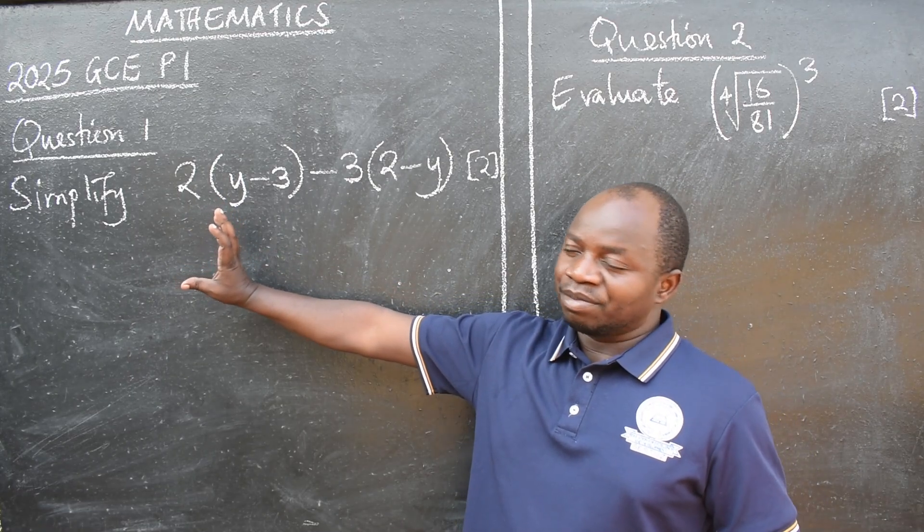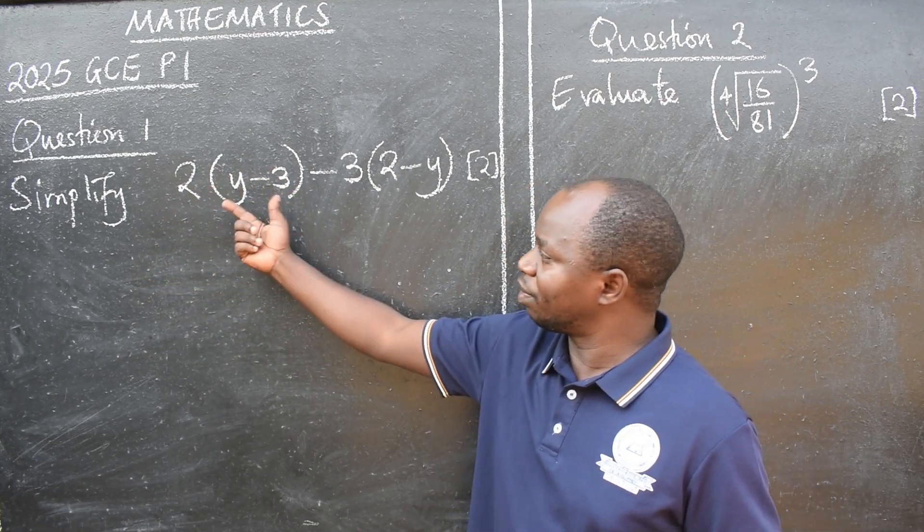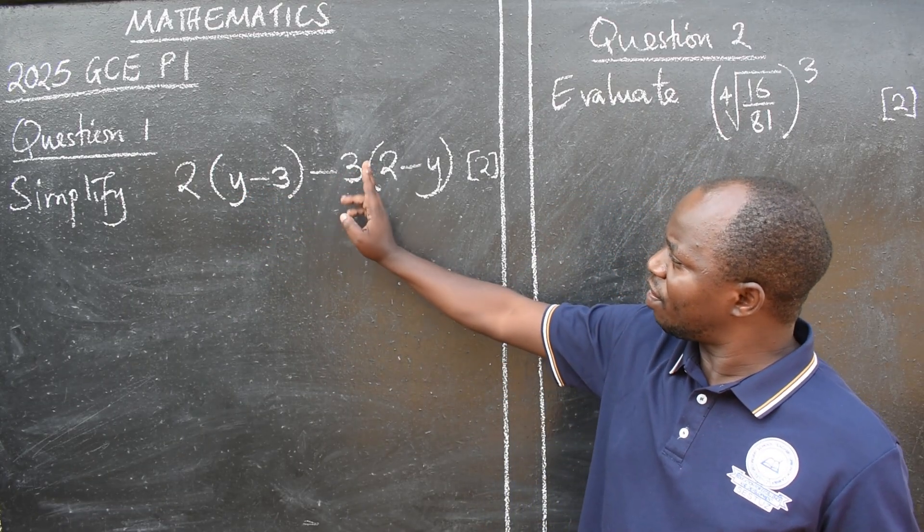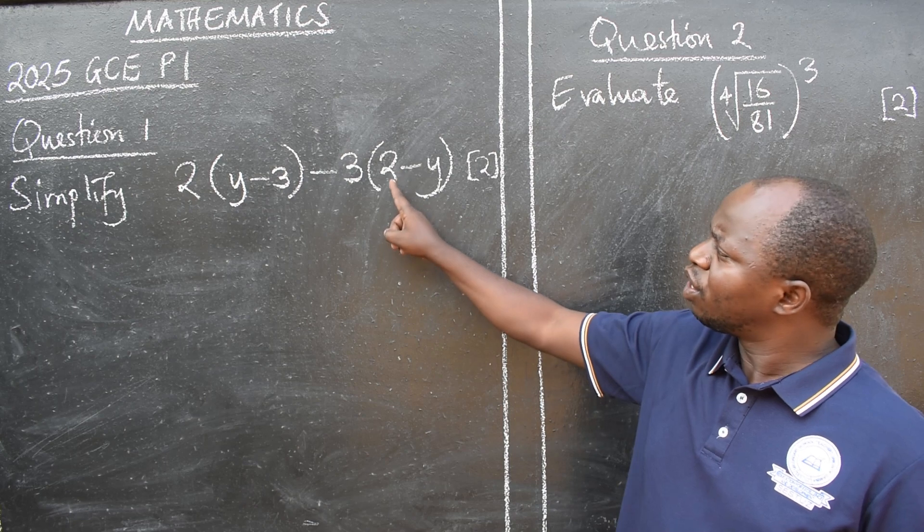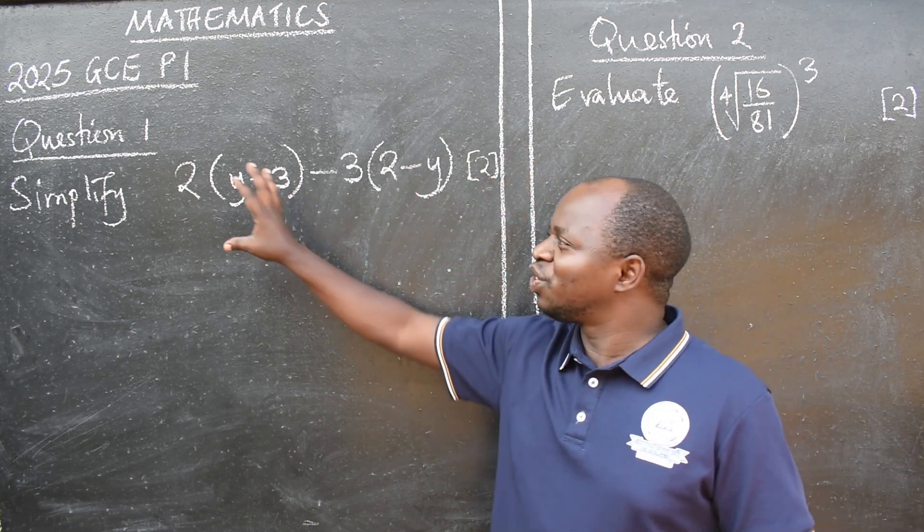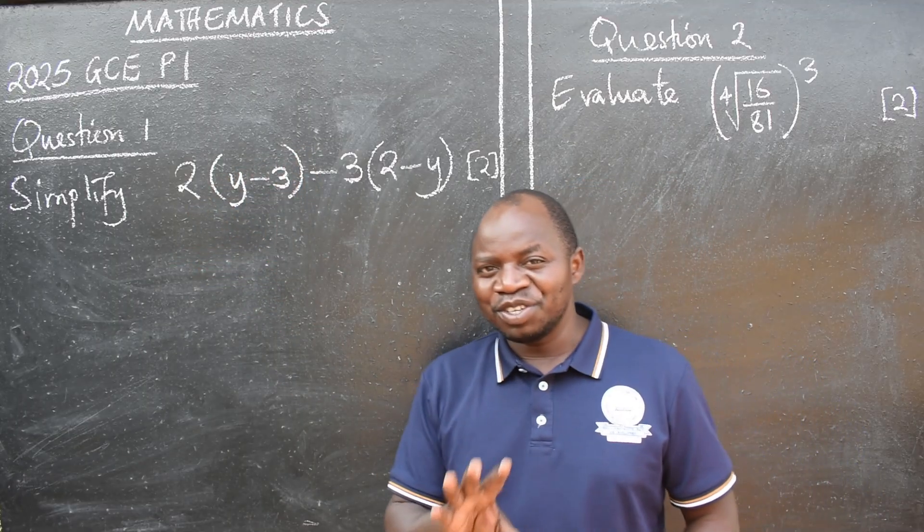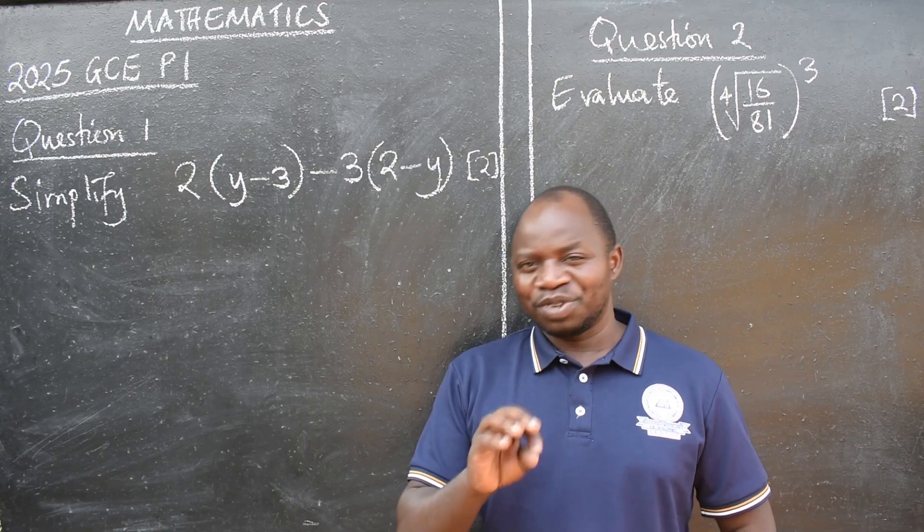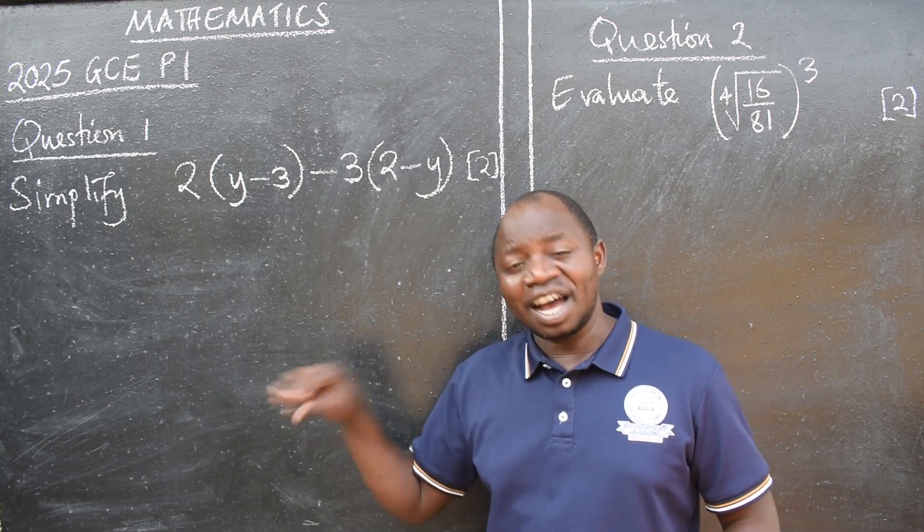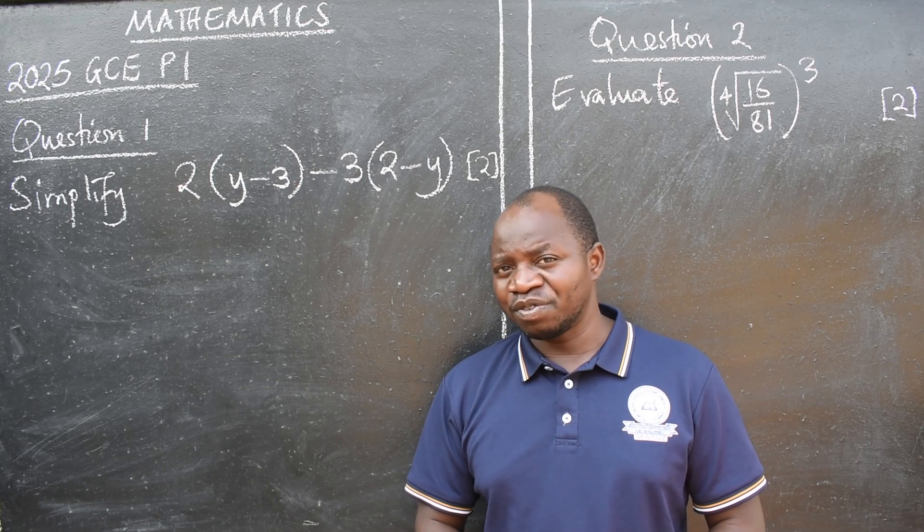The first question says simplify two, in brackets we have y minus three minus three, here we have two minus y. Two marks was given to this beautiful question. I want you to watch the video up to the end so that you understand everything that I'm going to say and there are also announcements at the end of the presentation.